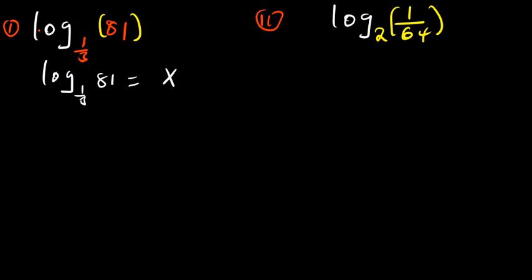I'm trying to find the value of x. When I find the value of x, then that is going to be my answer. The reason why I'm going to equate it to x is because it is in base 1 over 3 — I can't make 81 to be the same as the base. It's going to be difficult.